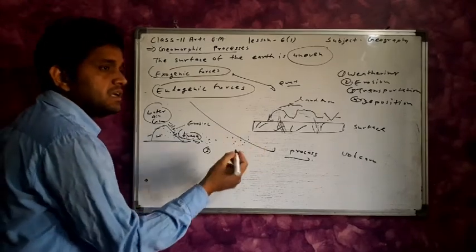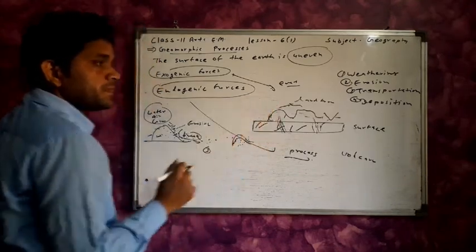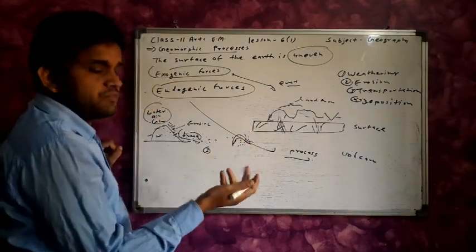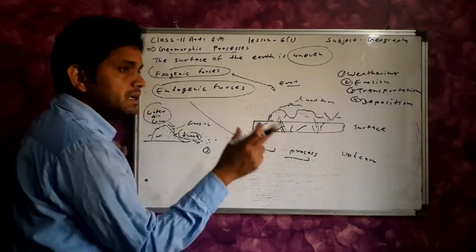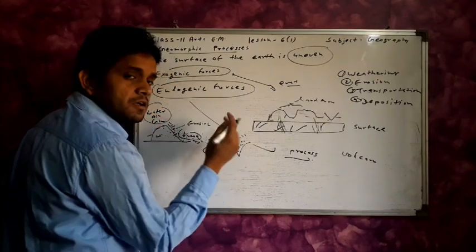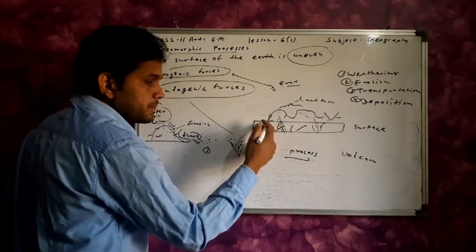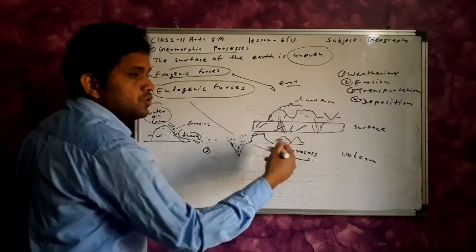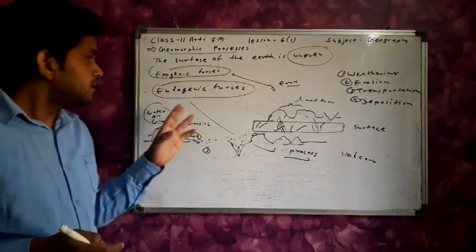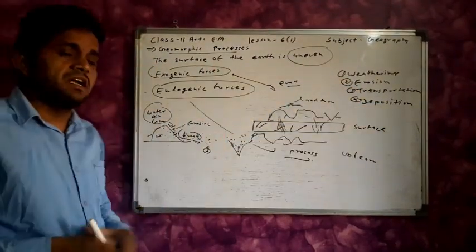And at last, the particles start the deposition — the deposition of scattered particles. By deposition, different types of relief are created. Trenches are filled by particles. Plateaus, mountainous regions, and plain regions are also formed by deposition. So different types of relief are created by exogenic forces like weathering, erosion, transportation, and deposition.